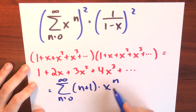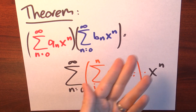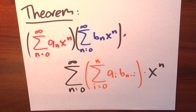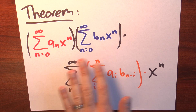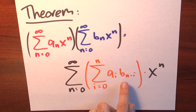n equals 0 is 1 times x to the 0, n equals 1 is 2 times x to the 1st, n equals 2 is 3 times x squared, n equals 3 is 4 times x cubed, and so on. To make that more rigorous, we probably have to talk about induction, or we could bring up a theorem on multiplying power series. Here's the theorem: the product of two power series with coefficients a sub n and b sub n is given by a convolved series — the sum i goes from 0 to n of a sub i times b sub n minus i.